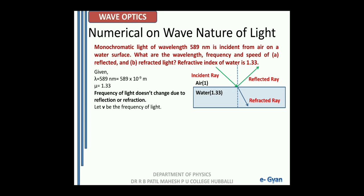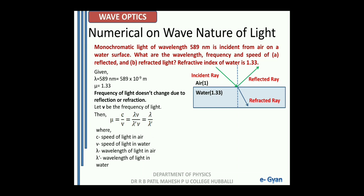Now let nu be the frequency of light. Then the refractive index can be written as the ratio of C by V, which can be further written as lambda into nu divided by lambda dash into nu, which is equal to lambda by lambda dash. Since frequency does not change, it gets cancelled. So C is speed of light in air, V is speed of light in water, lambda is wavelength of light in air, and lambda dash is wavelength of light in water.